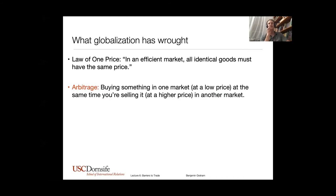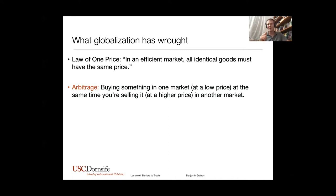So what globalization has wrought: if you've got a world in which it's become very cheap to move things across borders, and we've removed a lot of the policy barriers that used to make that harder, you get to a world where for a lot of products you have pretty close to a global price for that product. Oil is a really good example. You can go check the global price of oil, or the global price of a bushel of wheat. You can buy a bushel of wheat for almost the same price in New York, London, Tokyo, Shanghai, South Africa — because shipping wheat, which can move slowly and store for quite a long time, is so cheap to move and there's not a lot of tariffs on it. The law of one price says: if it's a totally efficient market, if there are no tariffs of any kind, and if shipping were purely free — not just cheap, but entirely free — then all identical goods must have the same price. That's the law of one price.